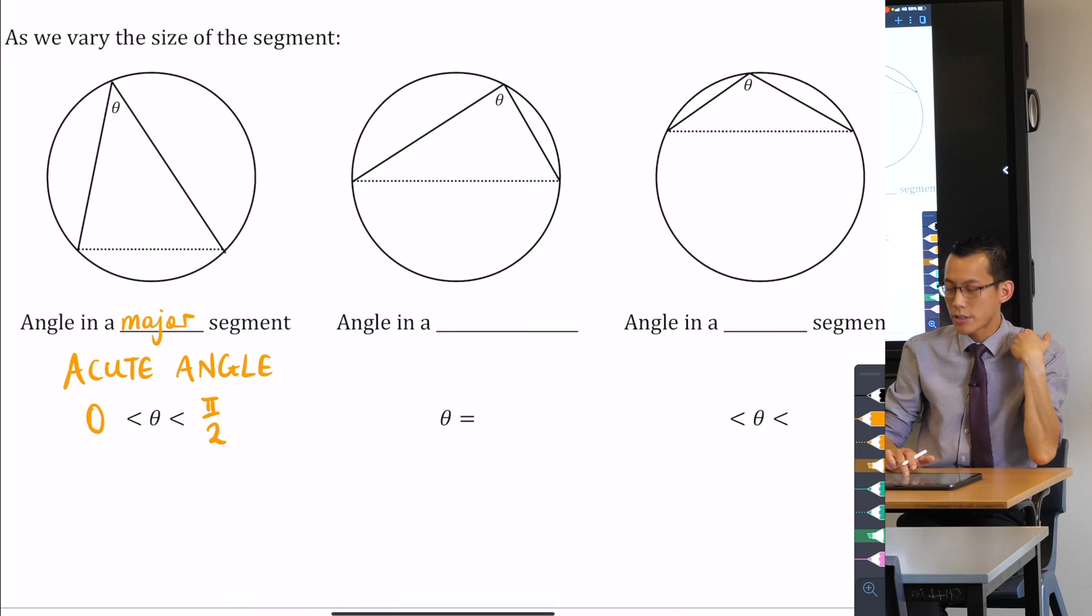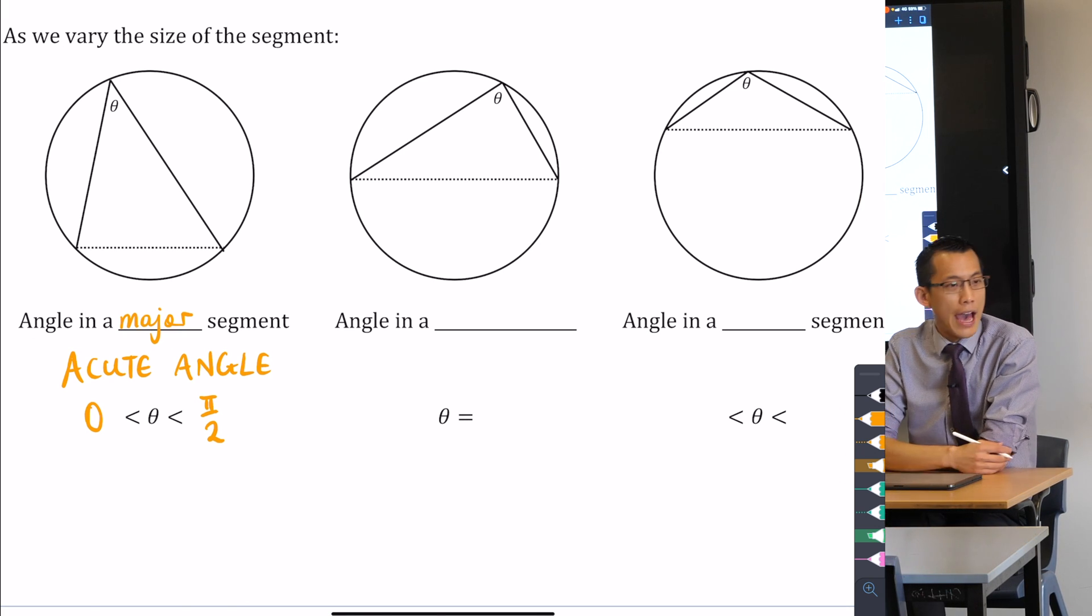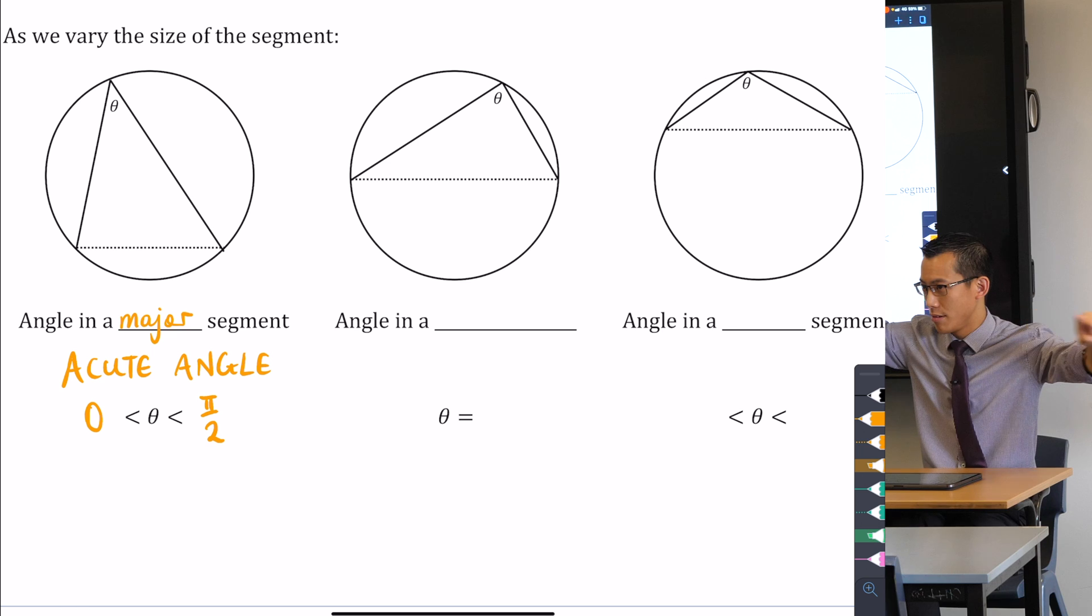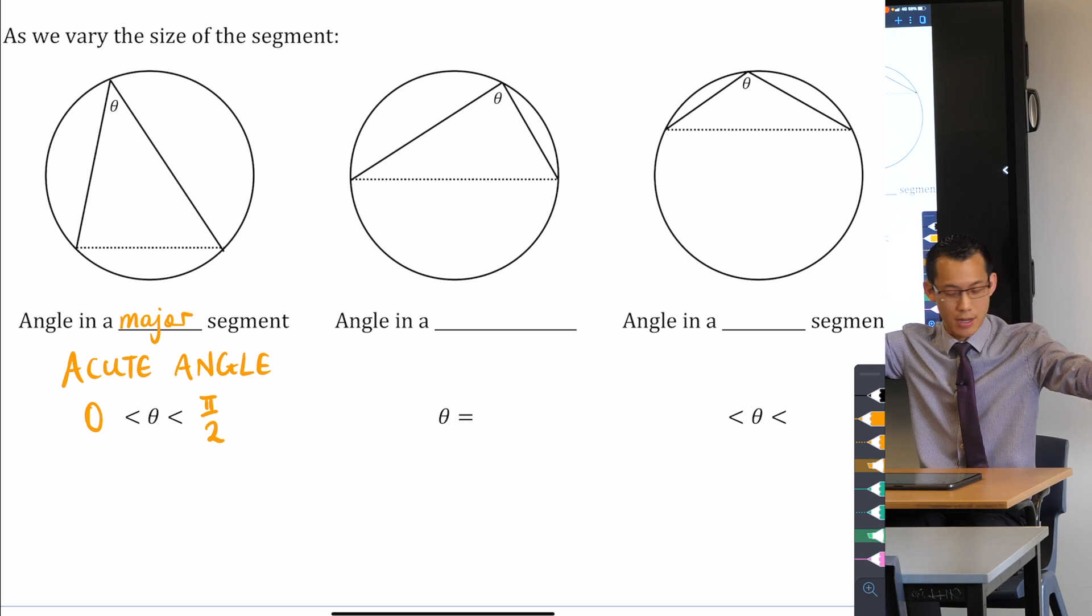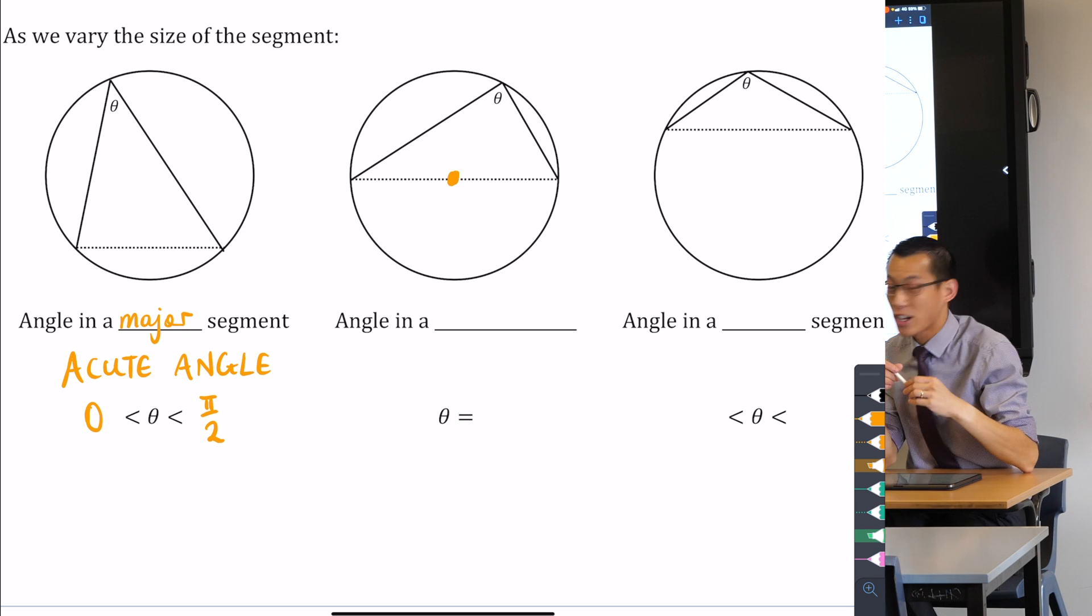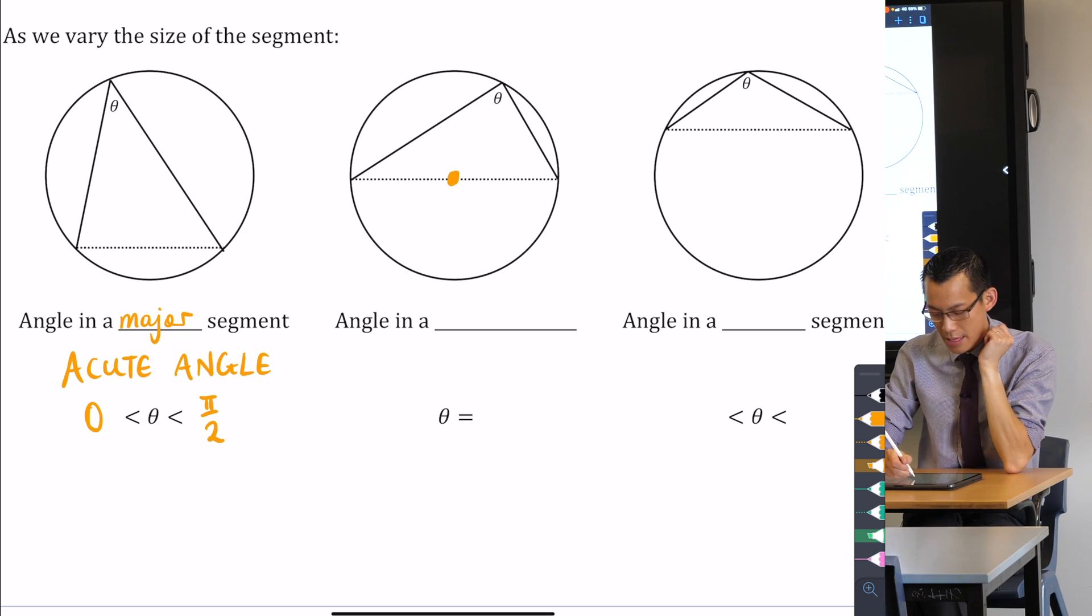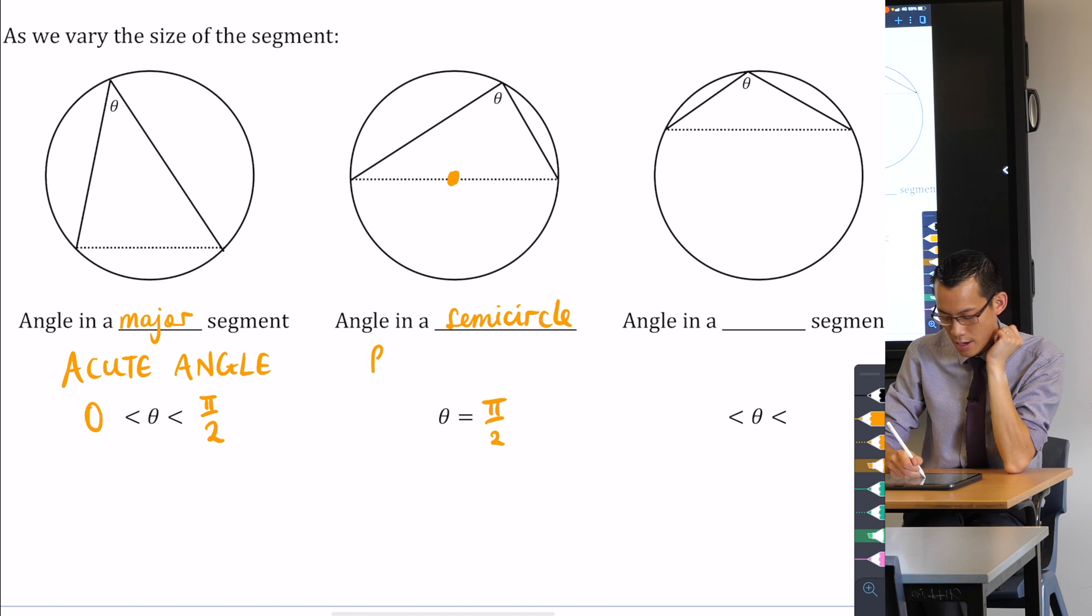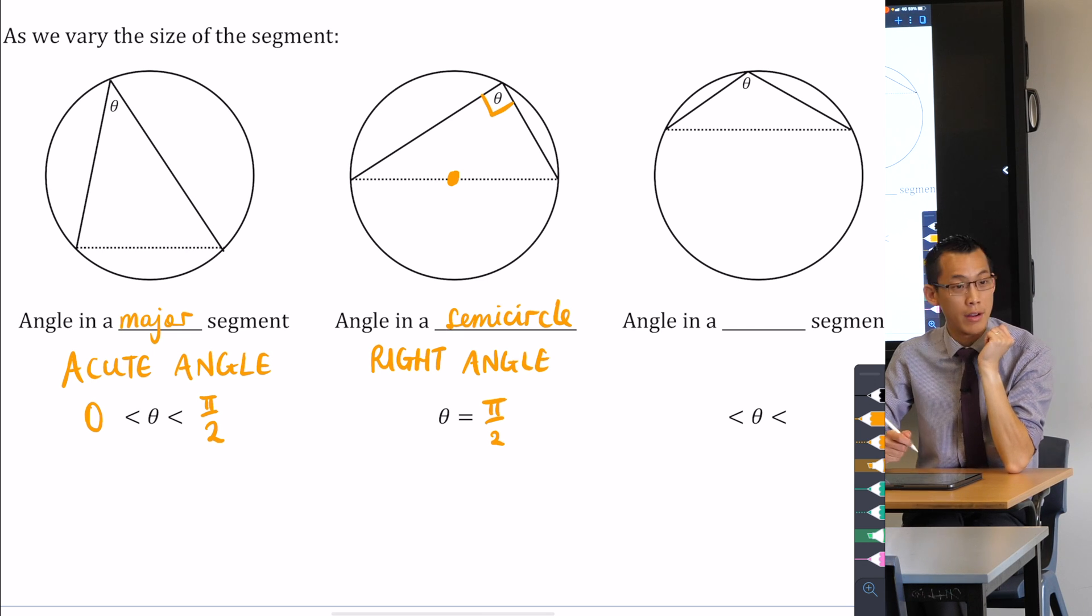Now we've already looked at this special case in the middle. If you have a segment that is bounded by a diameter, if my cord there goes through the centre, then this is the angle in a semicircle. We saw this before. What angle do you get up there? Exactly pi on 2, so it's a right angle. So you may even like to go ahead and put a corner up the top there.